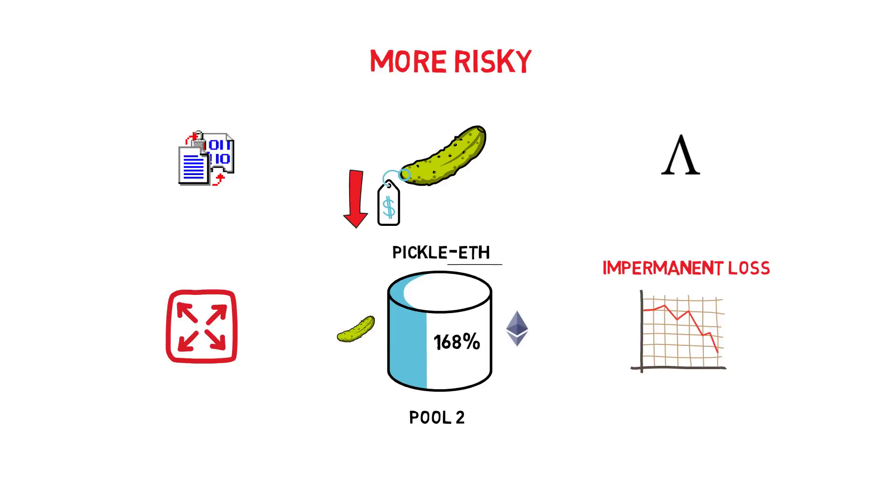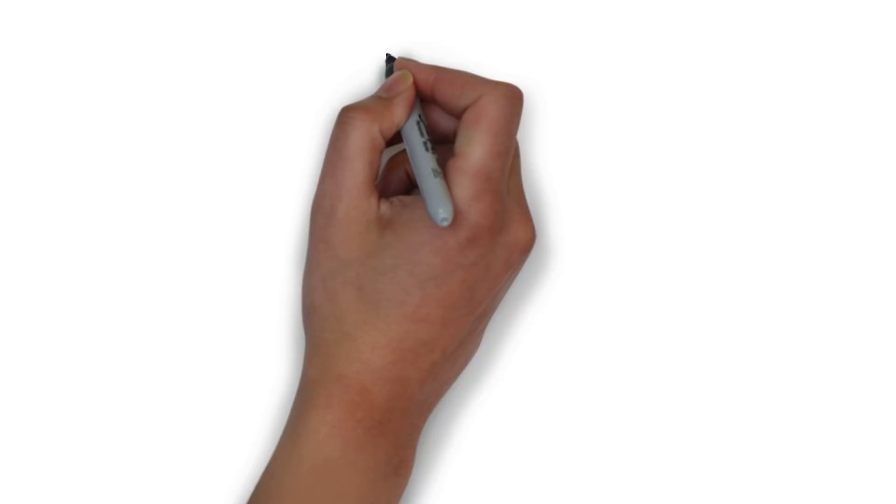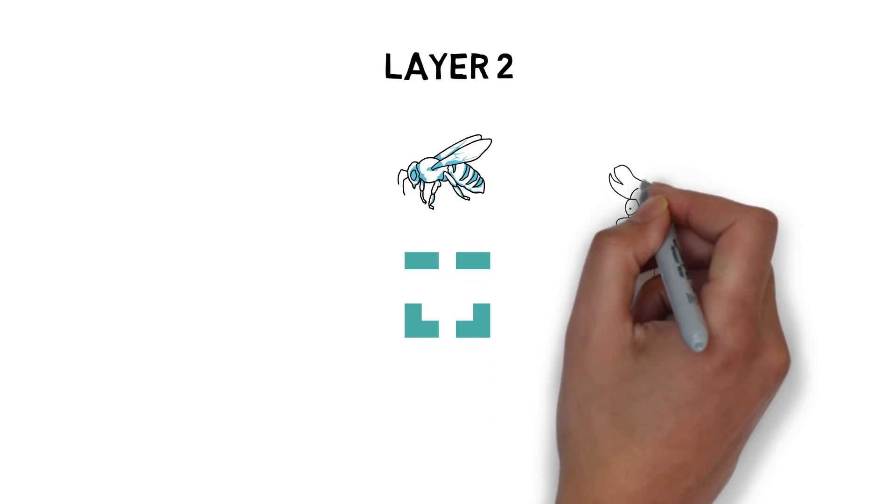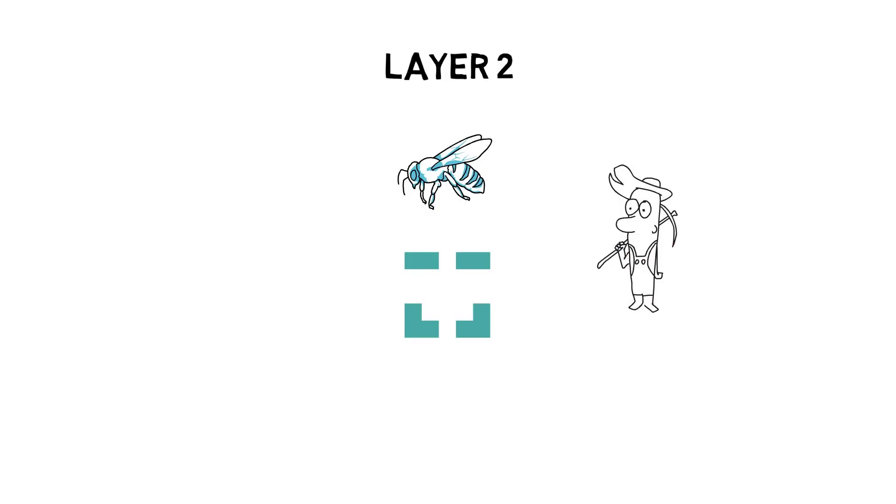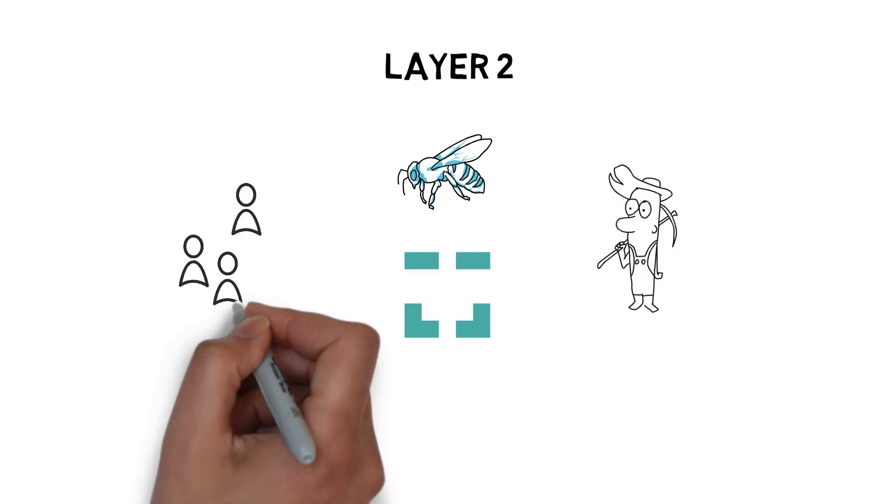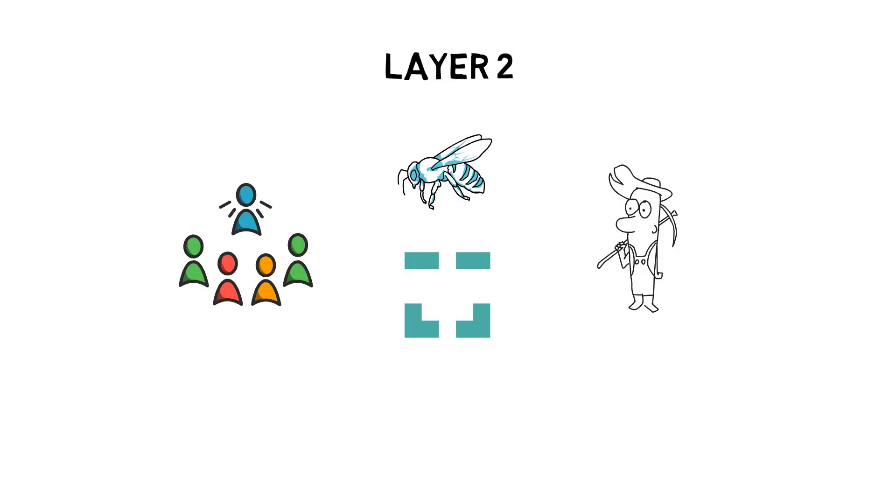There are also some other interesting options available on Layer 2 platforms such as HoneySwap on xDAI. In the future, I would expect to see more and more liquidity mining programs being launched on Layer 2 platforms with the aim of attracting more users from the base Ethereum layer.